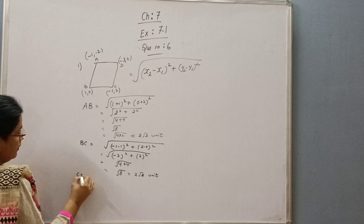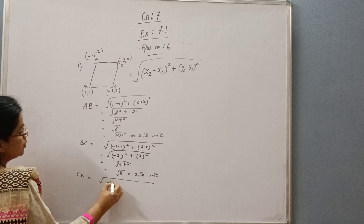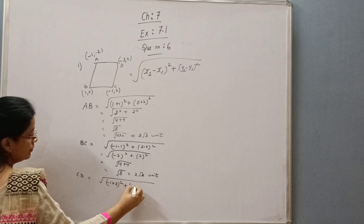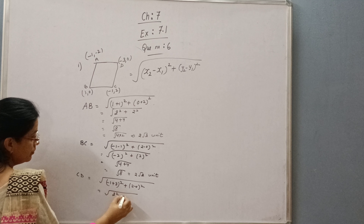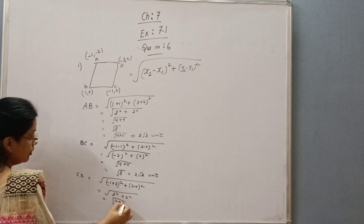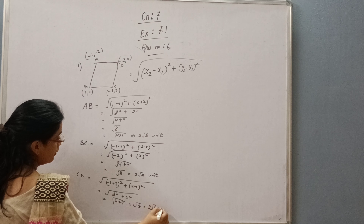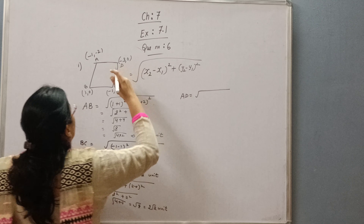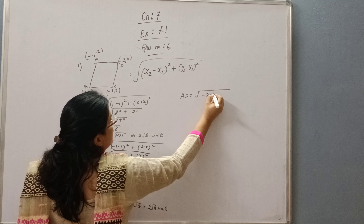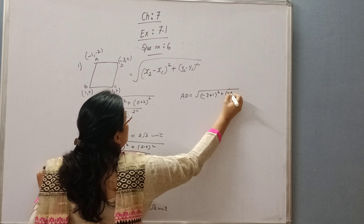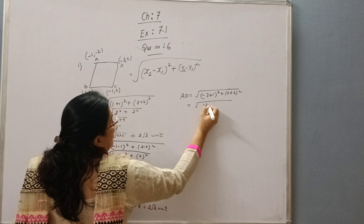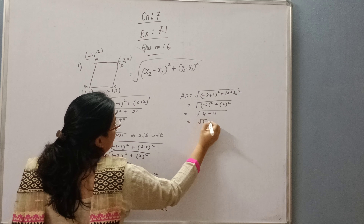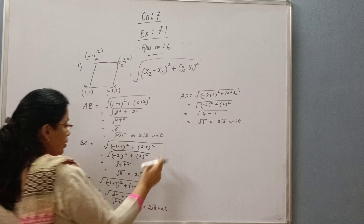Now we find CD: square root of (-3 minus (-1))² plus (0 minus 2)², which gives square root of (-2)² plus (-2)², equal to root 8, that is 2 root 2 units. Then AD: square root of (-3 minus (-1))² plus (0 minus (-2))², giving square root of 4 plus 4, equal to root 8, that is 2 root 2 units. Now you can see all the sides are equal.